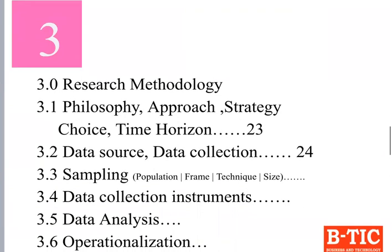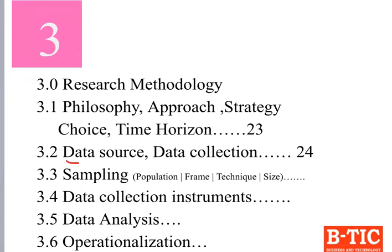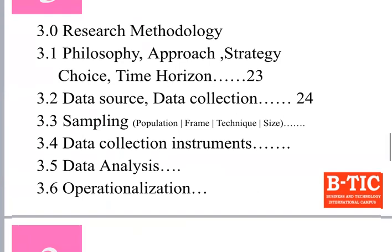The third part is research methodology. Make sure the literature review is not mingled with the methodology, and the methodology is not mingled with the literature above or the appendices below. In research methodology: first is philosophy, second is approach, third is strategy, fourth is choice, then time horizon, followed by data source, data collection, sampling, and instrument.